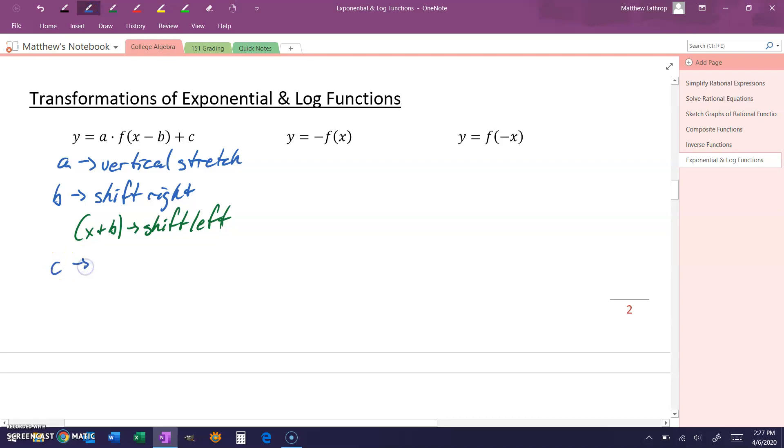And c, the constant at the end, represents our graph being shifted up by a specific number of units. And if instead our function ended with minus c, that would be a shift down of c units.